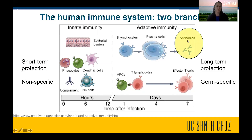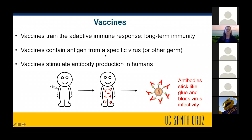Today I'm going to be talking about antibodies. These are proteins that are part of our immune system and they are developed in response to a virus infection. Vaccines are meant to train our adaptive immune response to give us long-term immunity. Vaccines contain an antigen from a specific virus or another germ, and vaccines will stimulate antibody production in humans. When we have antibodies against that vaccine antigen, if this person is exposed to the virus, those antibodies will stick like glue onto the virus and prevent it from being able to infect cells.